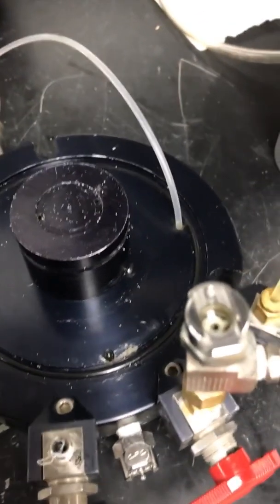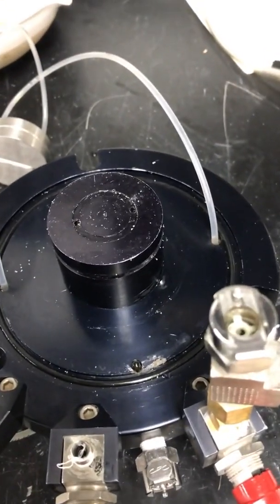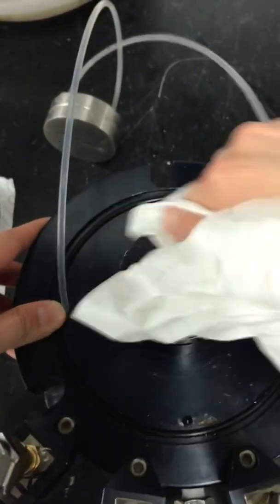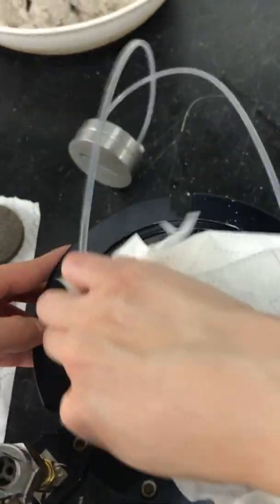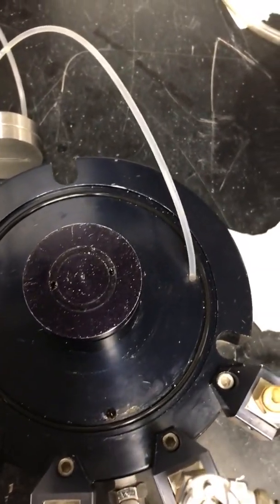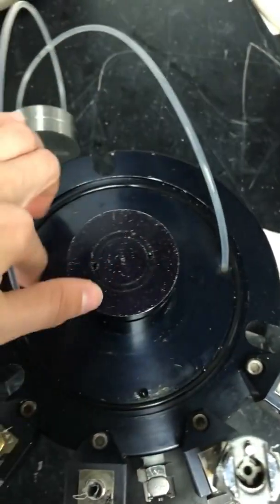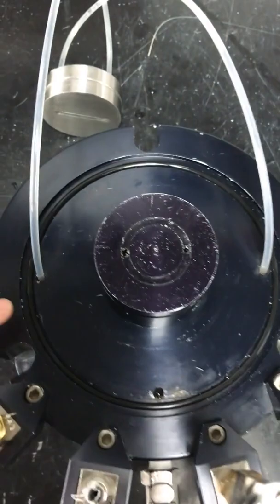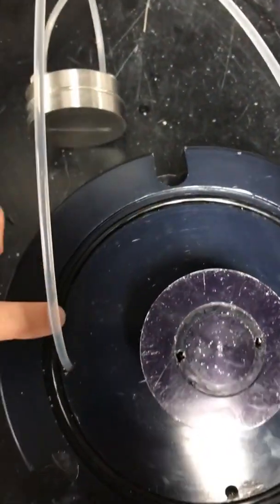Before we do anything, we're going to first clean off the pedestal along with the top cap to remove any sand or grease that was left over. You're going to also need to remove all the sand around the pedestal, especially the sand that could have fallen into the grooves right here.